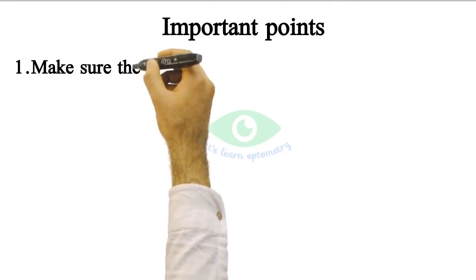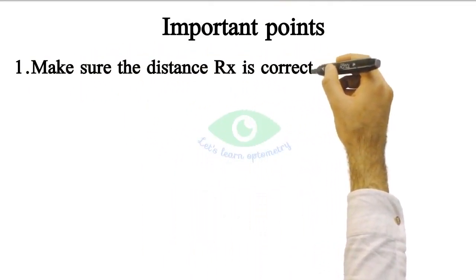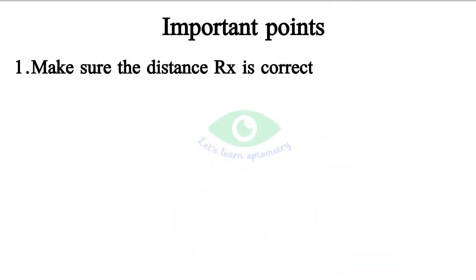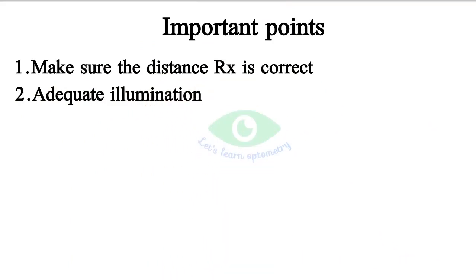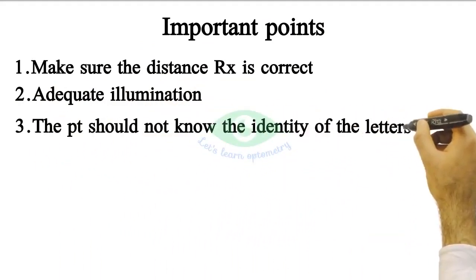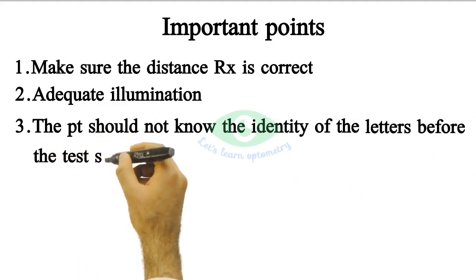Important points: Make sure the distance refraction is correct. Incorrect refraction will lead to overestimation of amplitude values in myopes and underestimation in hyperopes. Ensure adequate illumination of the target. The patient should not know the identity of the target before the test starts.